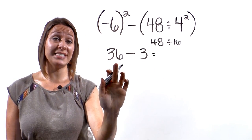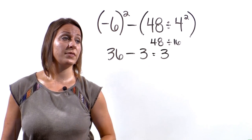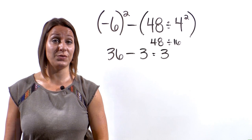Now 48 divided by 16 is 3, so this entire set of parentheses simplifies down to 3. Next, we have 36 minus 3, which is 3. So your final answer for this problem is 3.